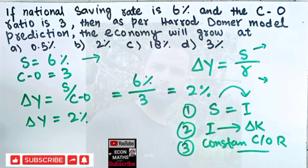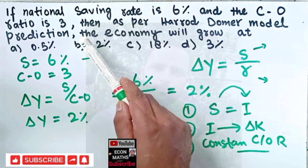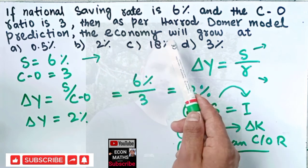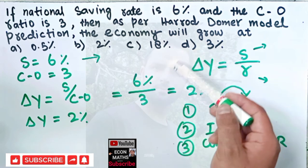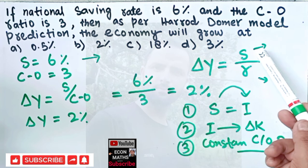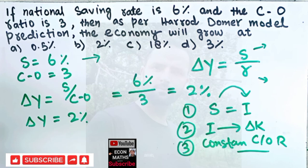This was a simple problem on Harrod-Domar model where we were given the national saving rate and capital output ratio to determine the growth rate. What we have to do is use this relationship: growth rate equals the saving rate divided by capital output ratio. I hope I make myself clear, thank you.